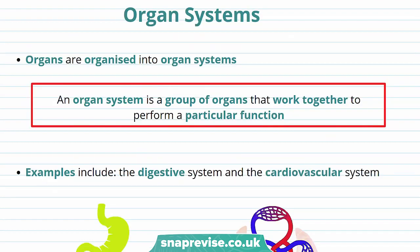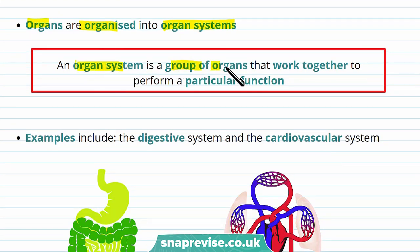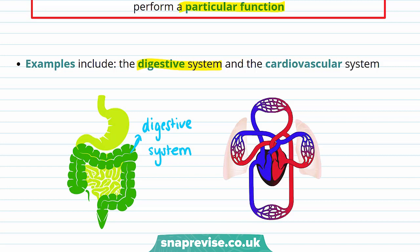Now let's talk about the next level of organisation: organ systems. Organs are organised into organ systems. An organ system is a group of organs that work together to perform a particular function. One example is the digestive system. The digestive system breaks down food and also acts as an exchange system. It is made up of glands, the stomach, the liver, the small intestine and the large intestine, which all work together to fulfil the function of the digestive system.